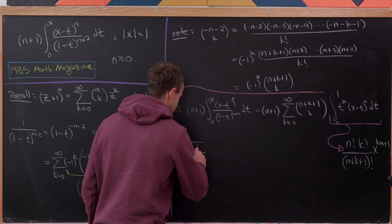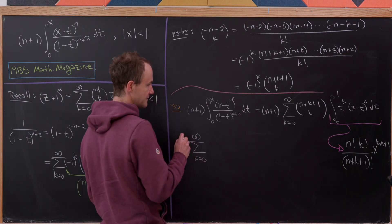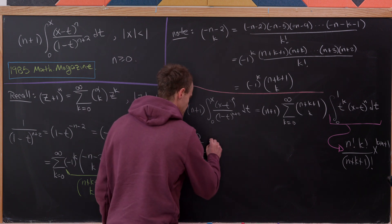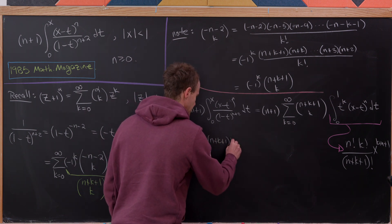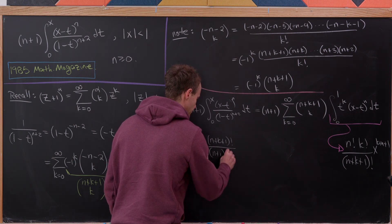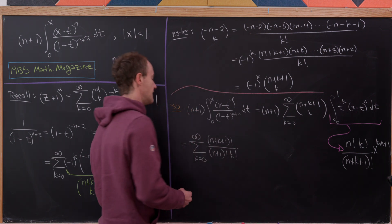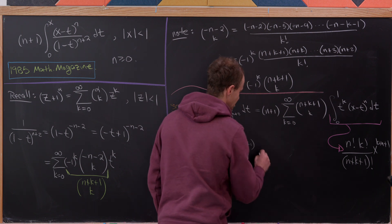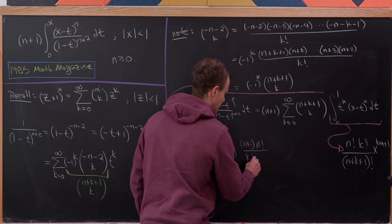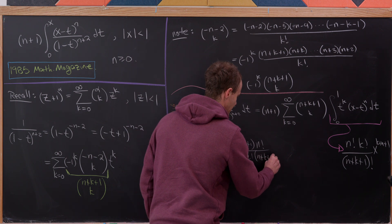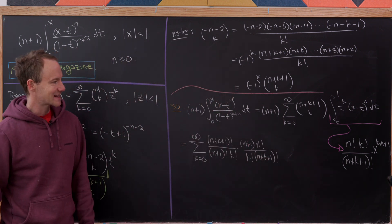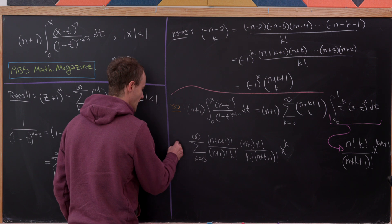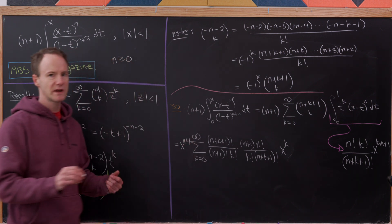So we have the sum as k goes from 0 to infinity. Using the factorial form of the binomial coefficient, n plus k plus 1 choose k equals n plus k plus 1 factorial over n plus 1 factorial times k factorial. Multiplying by the integral result and bringing n plus 1 inside, we get n plus k plus 1 factorial over n plus 1 factorial times k factorial, times n factorial over k factorial times n plus k plus 1 factorial, times x to the k plus n plus 1.